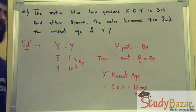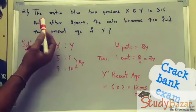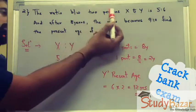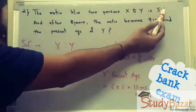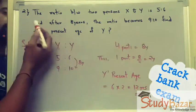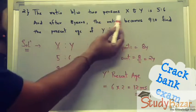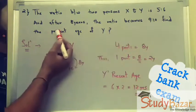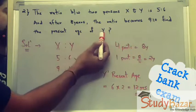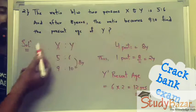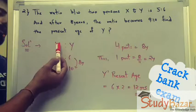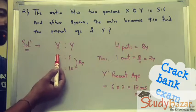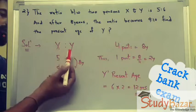Now let's see another example. It's given that the ratio between two persons X and Y is 5:6, and after eight years this ratio becomes 9:10. We have to find the present age of Y. The ratio X to Y at present is 5:6, and after eight years it is 9:10.